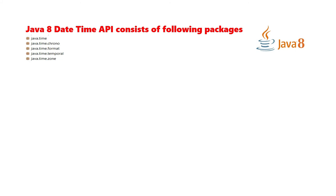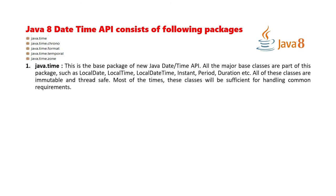When we talk about the Java DateTime API packages, there are primarily five packages. The base package is java.time, followed by java.time.chrono, java.time.format, java.time.temporal, and java.time.zone. The java.time base package contains all major base classes such as LocalDate, LocalTime, LocalDateTime, Instant, Period, and Duration. All of these classes are immutable and thread-safe, and most of the time these classes will be sufficient for handling common requirements.